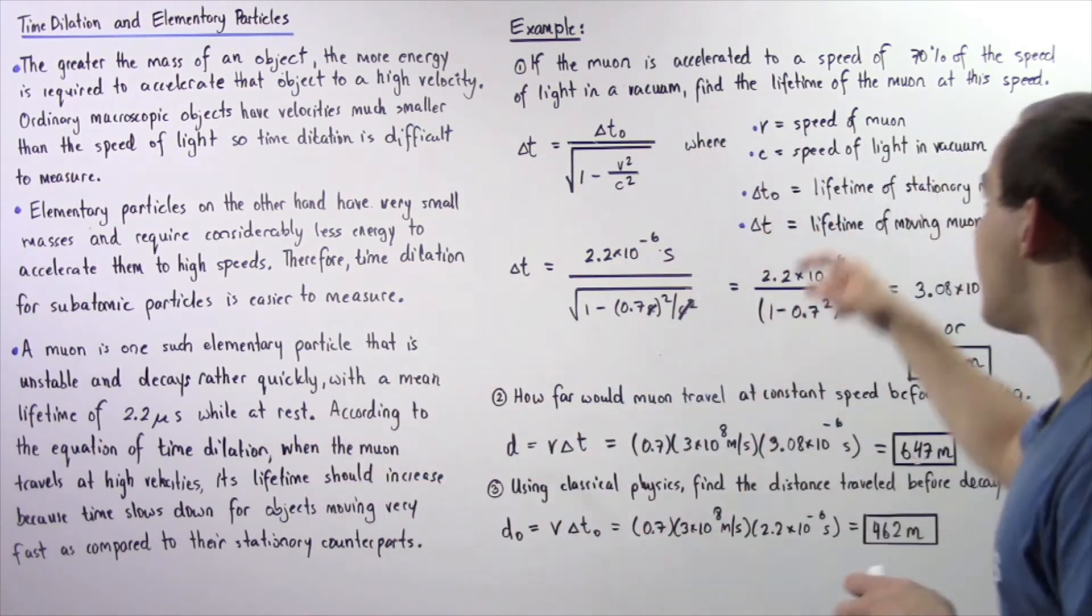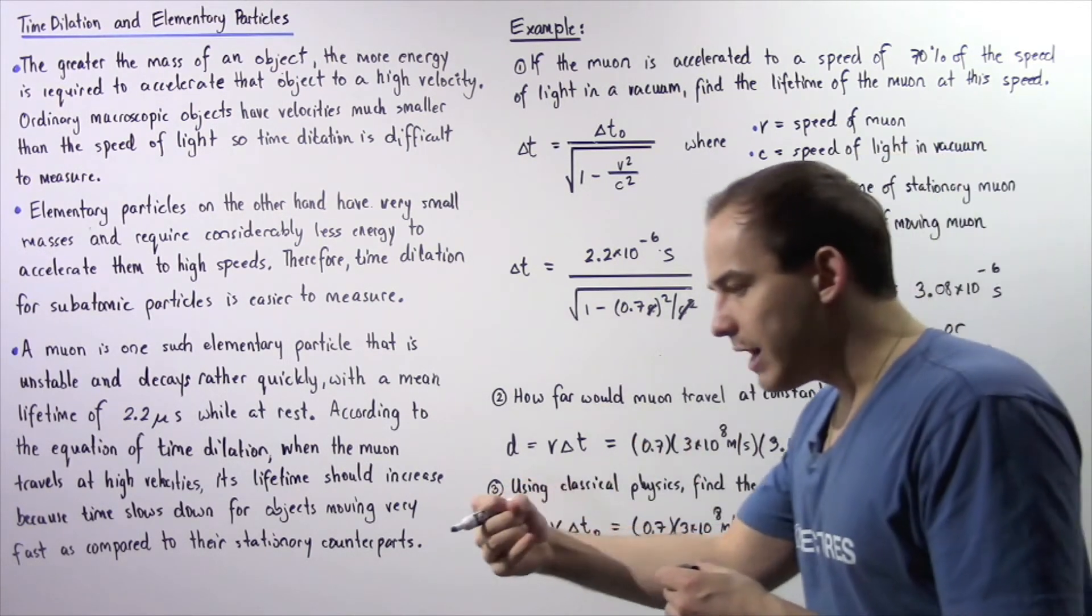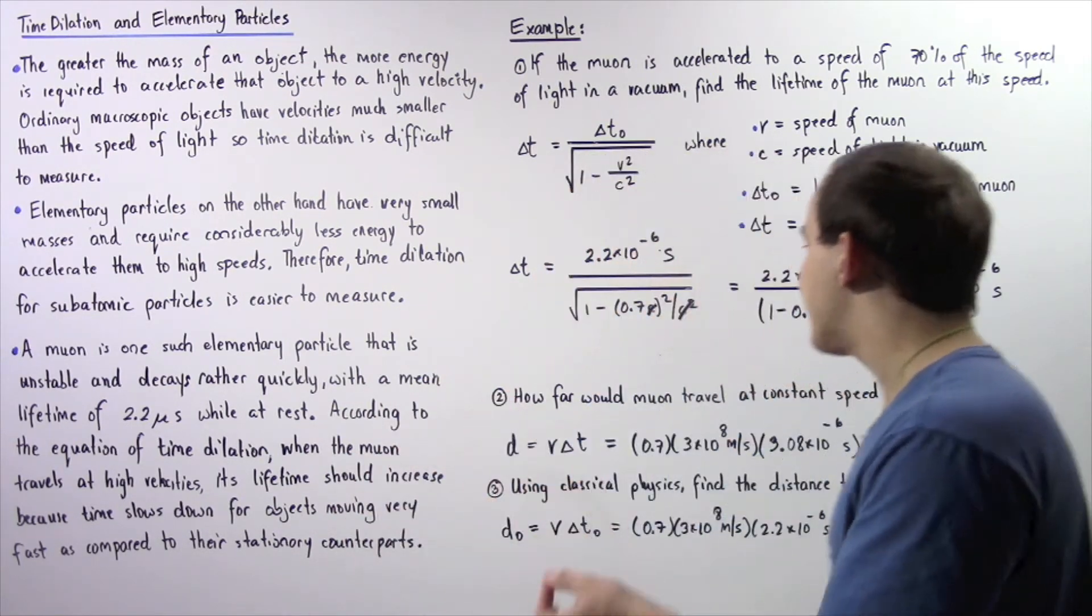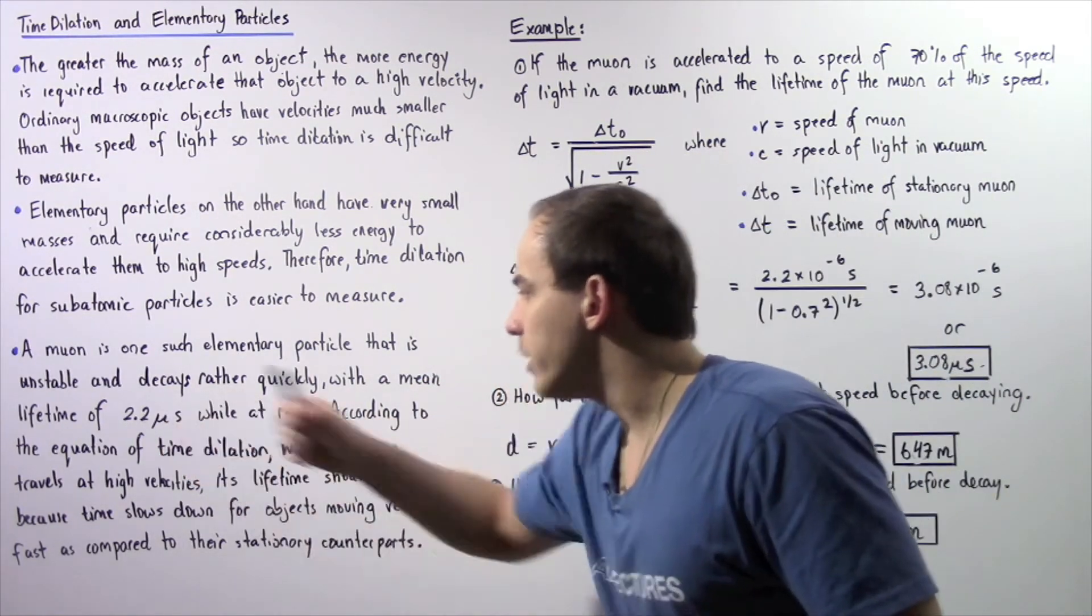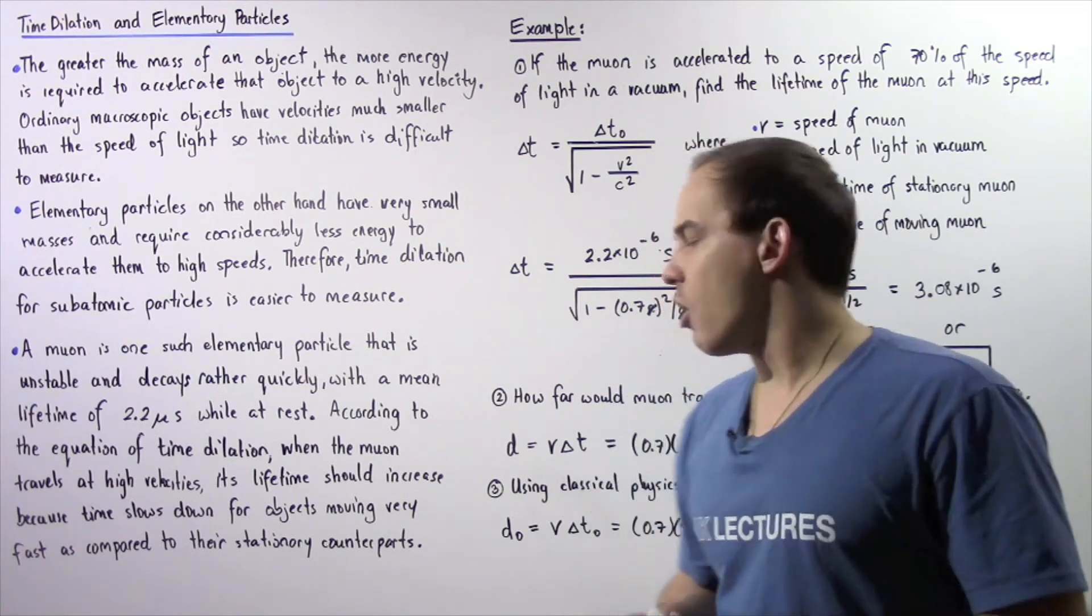So we divide and we get that our lifetime of our muon when it's moving at a velocity v is equal to 3.08 times 10 to the negative 6 seconds or about 3.08 microseconds. So we see that the lifetime of our muon that is traveling with the high velocity does in fact increase from 2.2 microseconds to 3.08 microseconds. Now let's move on to part 2.